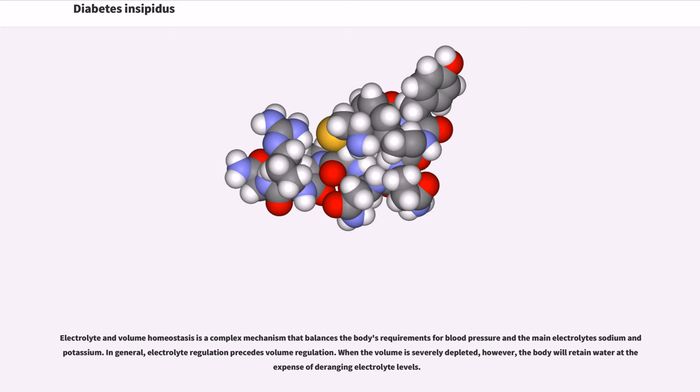Electrolyte and volume homeostasis is a complex mechanism that balances the body's requirements for blood pressure and the main electrolytes sodium and potassium. In general, electrolyte regulation precedes volume regulation. When the volume is severely depleted, however, the body will retain water at the expense of deranging electrolyte levels.